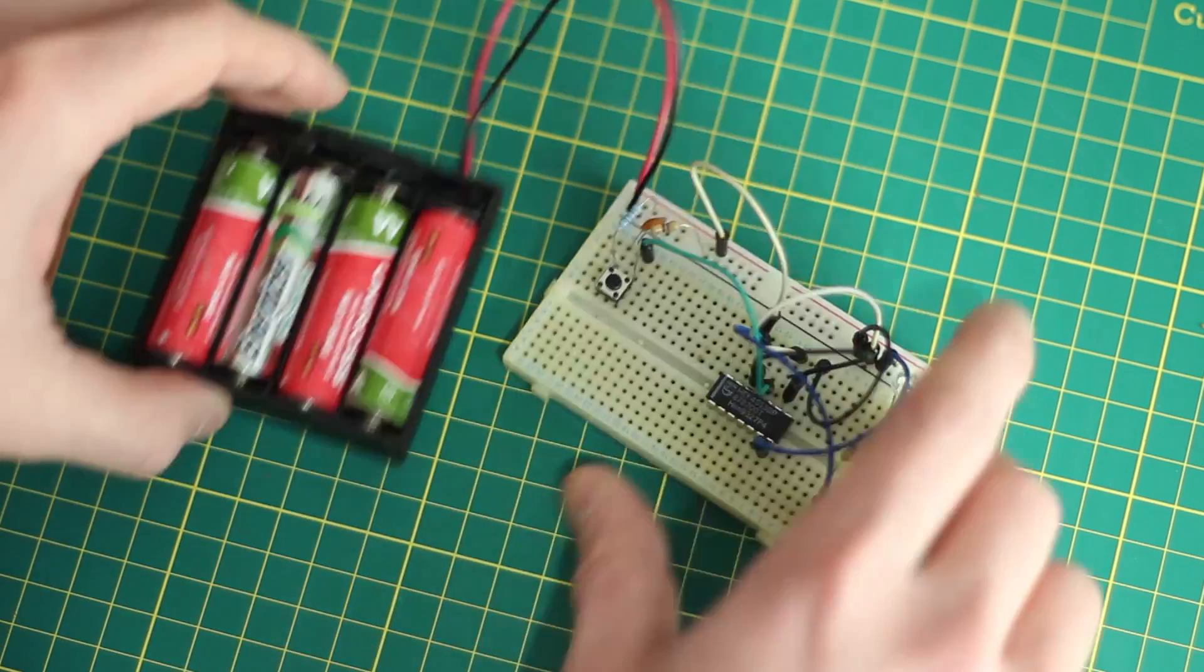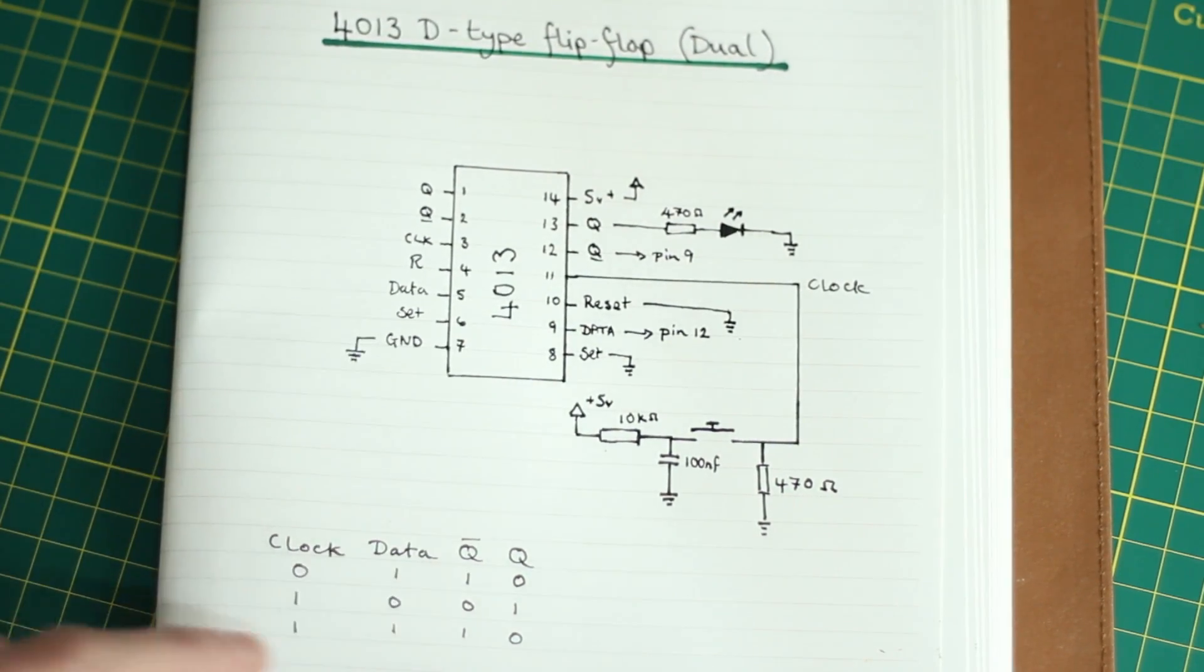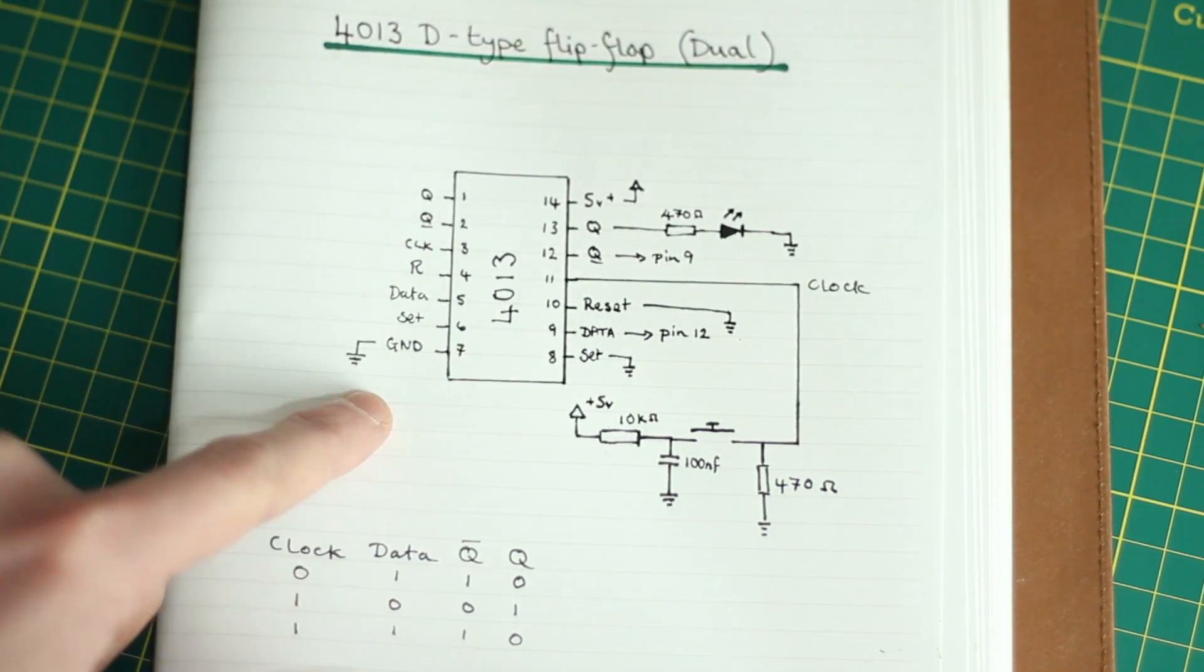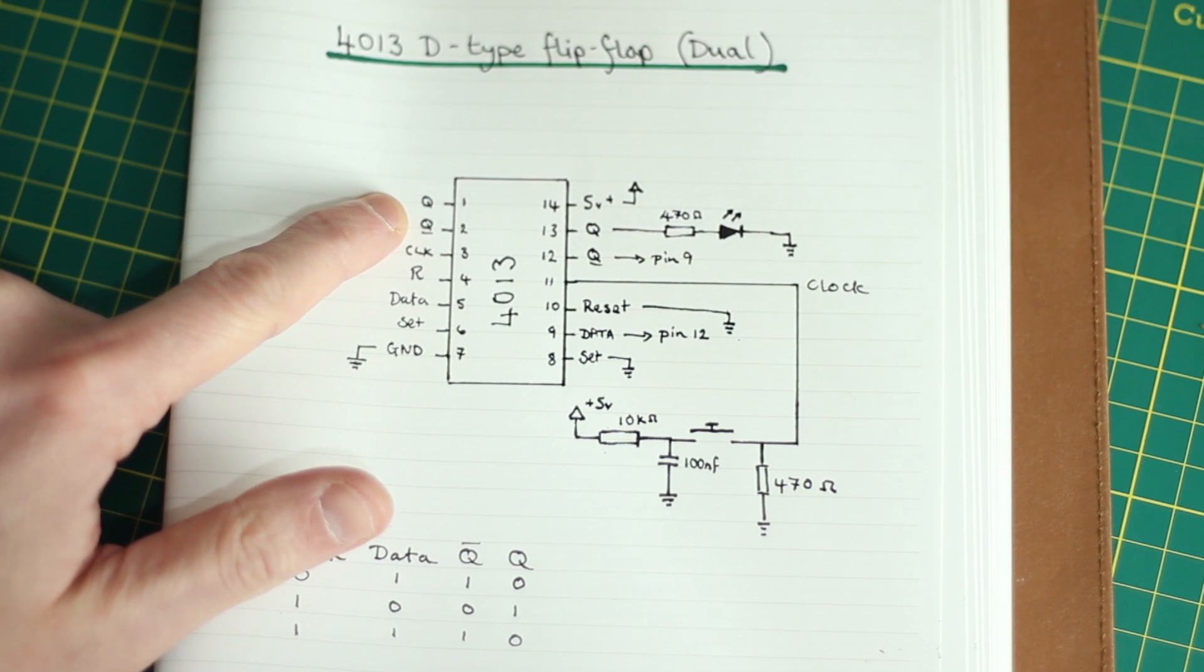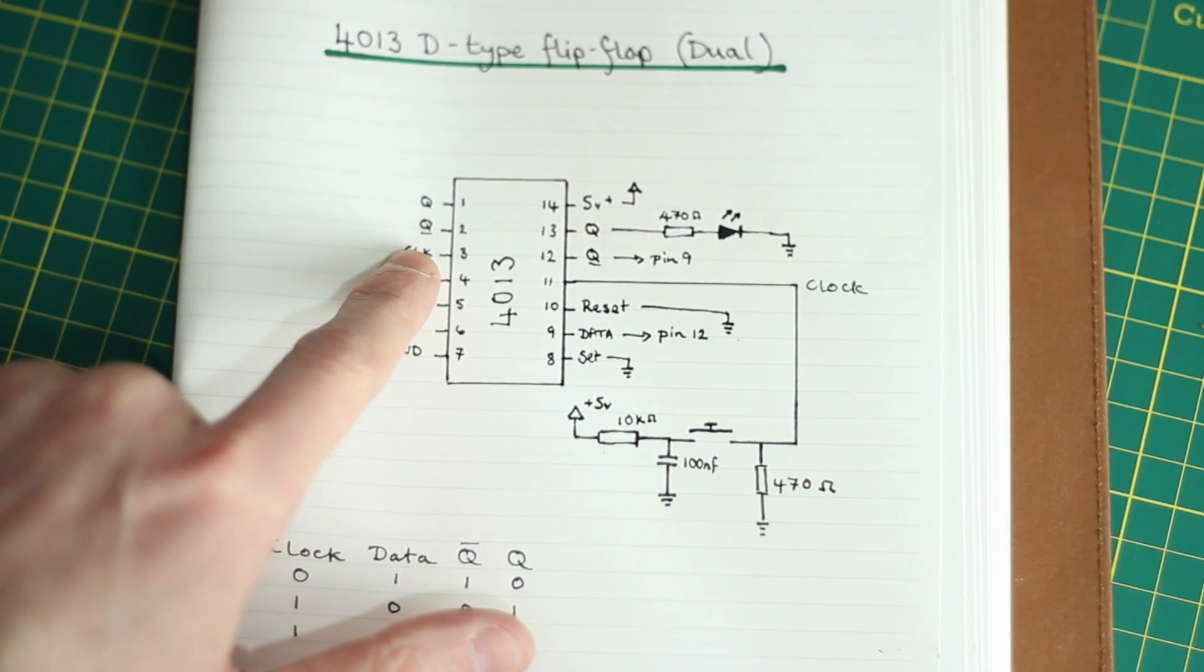We've got our 4013 here, and you'll see it's labeled on this side. Actually we're using this side, but I'll go through it on this side. So this is your first output Q. Q underscore—I think it's overscore actually, but I've not done that.